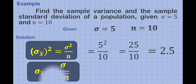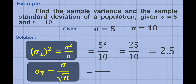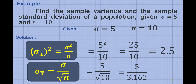And for the standard deviation, we have sigma sub x-bar is equal to the value of sigma, which is 5, divided by the square root of 10, which is equal to 3.162, and that is approximately 1.58. So therefore, the variance is 2.5 and the standard deviation is 1.58.